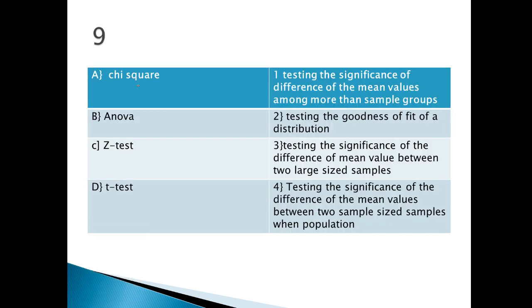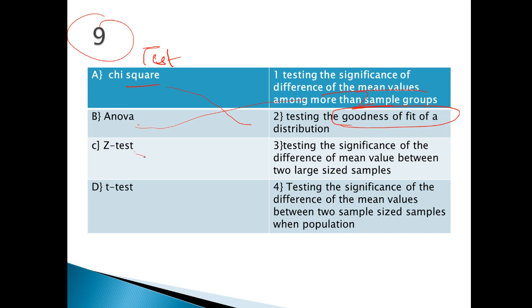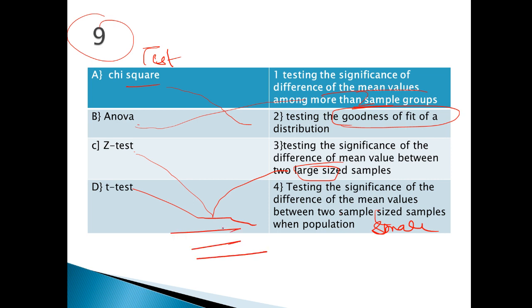Next question: which test has which meaning? Very easy. For chi-square: goodness of fit. For ANOVA: more than two sample groups. For z-test: large sample. For t-test: small sample size. So in this way, every test's property — each one you need to revise in detail.